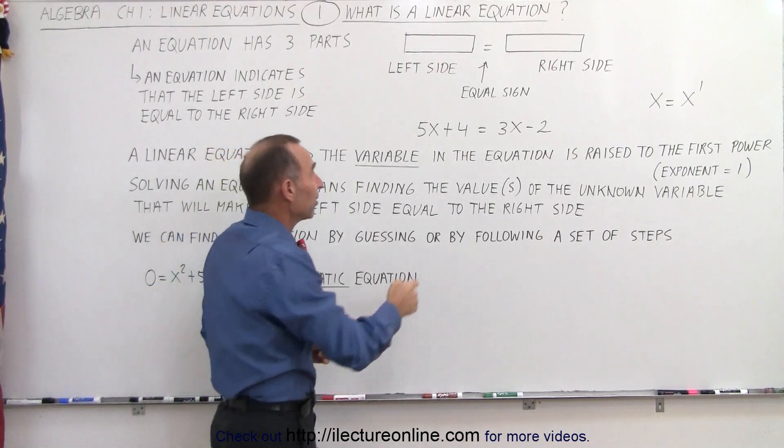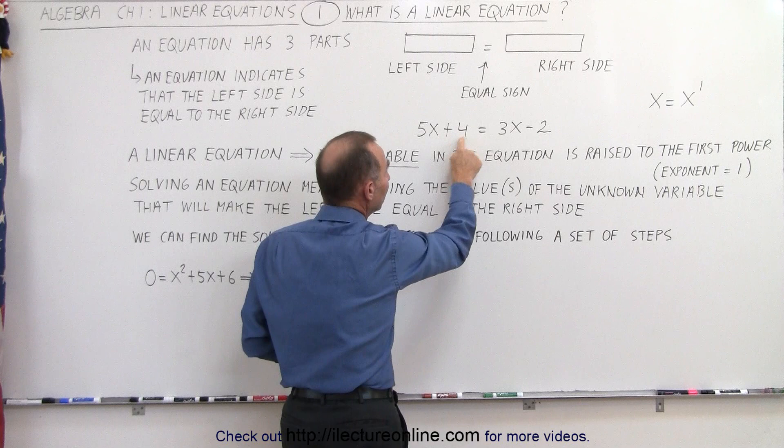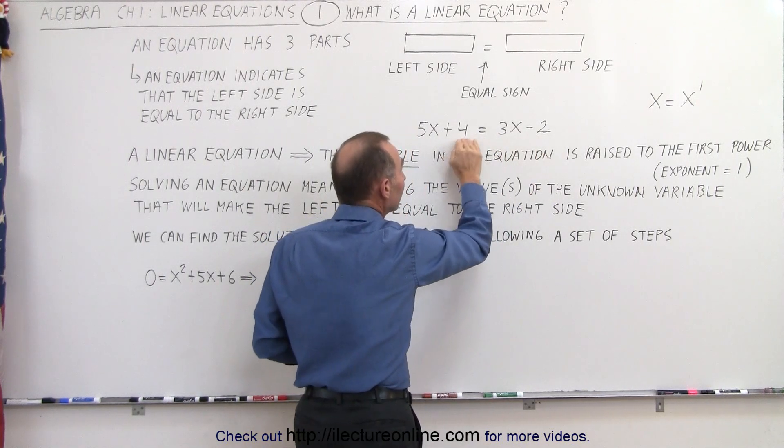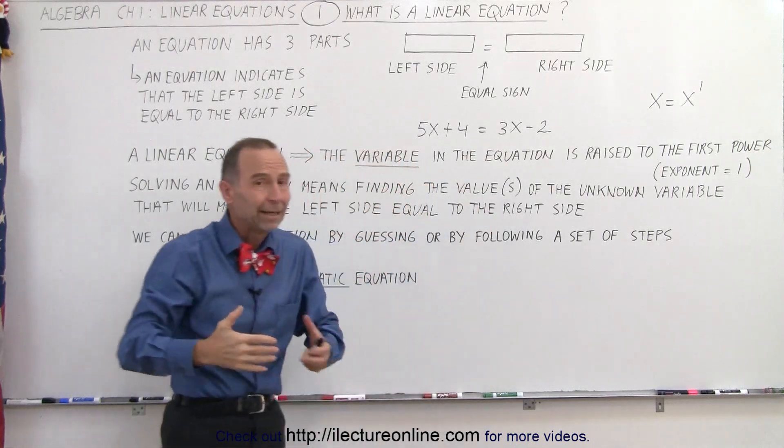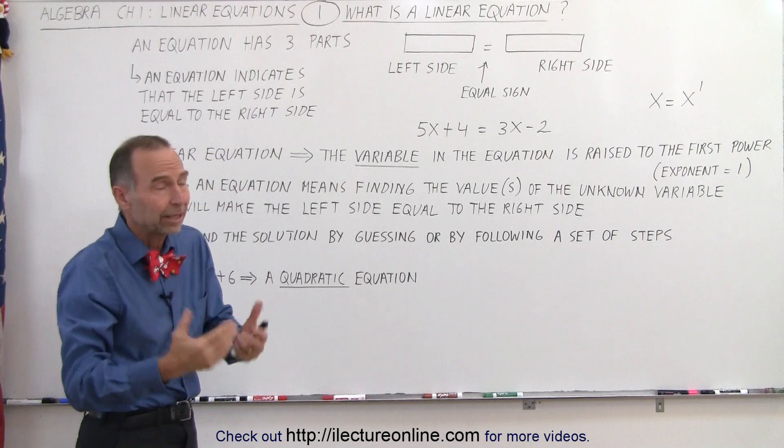So then we try a different value. Let's say x equals 1. So 5 times 1 plus 4 is 9. 3 times 1 minus 2, that would be 6 minus 2 is 4. Since 9 does not equal 4, again, 1 is not a good solution for that equation. In other words, x is not equal to 1.